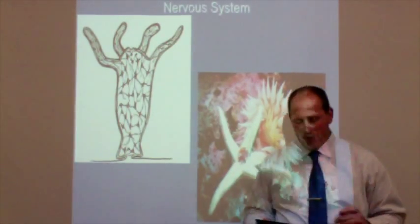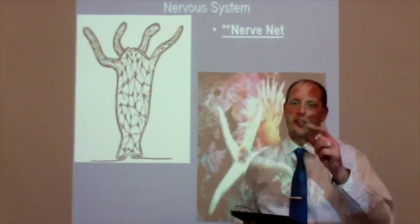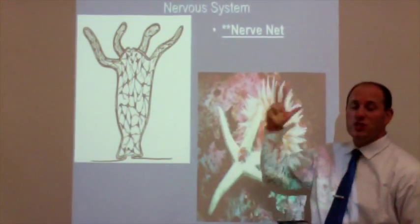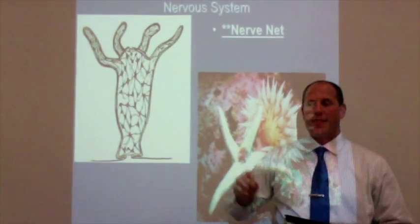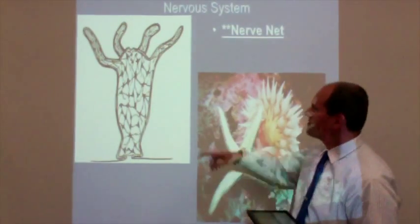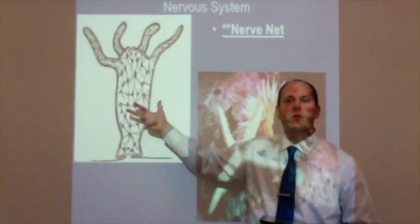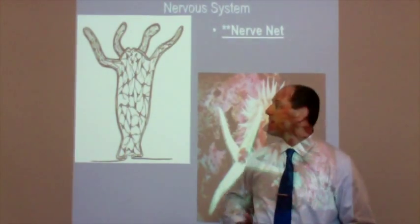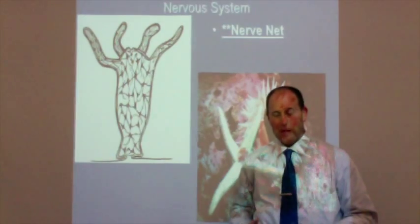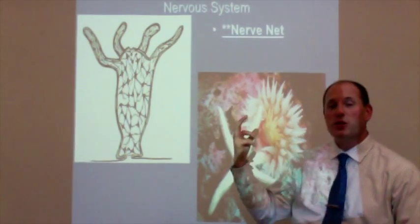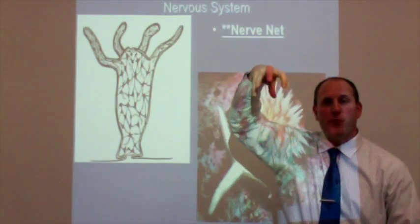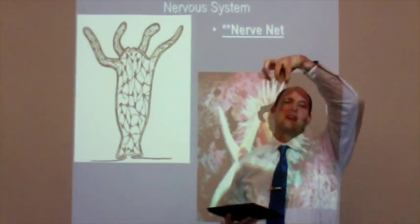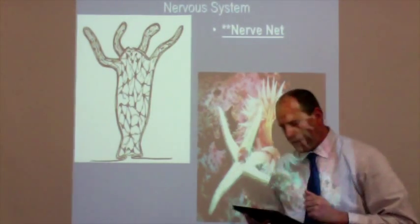For their nervous system, they have what we call a nerve net — and you need to know that. Think of a net covering the organism; the lines of the net and the intersections represent the nerve cells. It's a very large web of interconnected nerve cells covering the outside of the organism. Some forms have more nerve cells clustered in certain areas — like the medusa's bell-shaped form, which has nerve cells around the edge of the bell to control that pulsating, swimming-like motion.